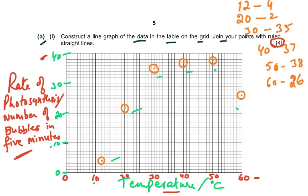After plotting the six points, join them with ruled straight lines and do not extrapolate - meaning do not extend the line beyond the data points on either side. You just join the points which were given to you on the graph. Do not extend it in any direction.